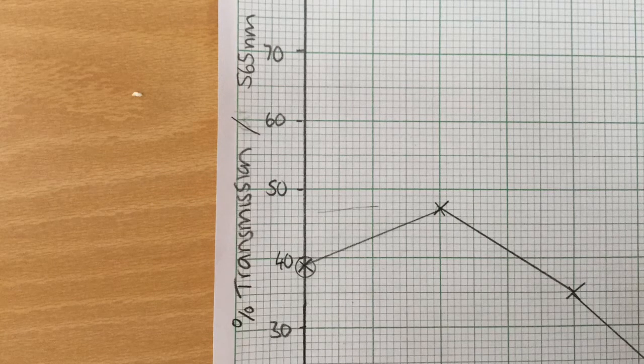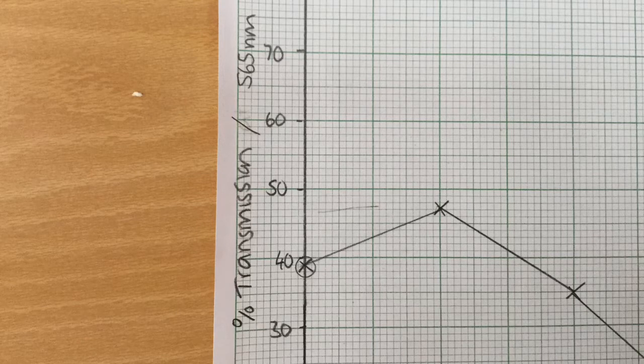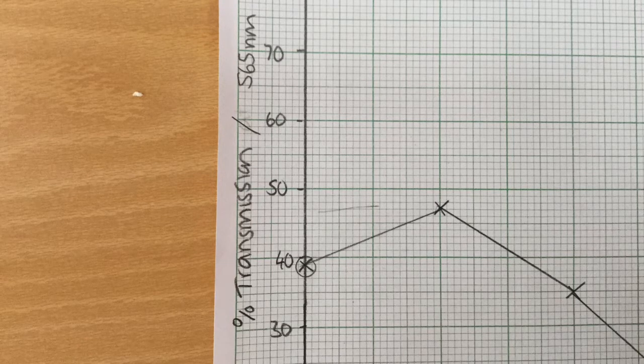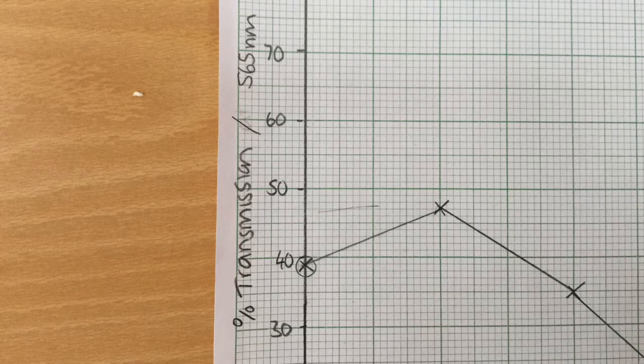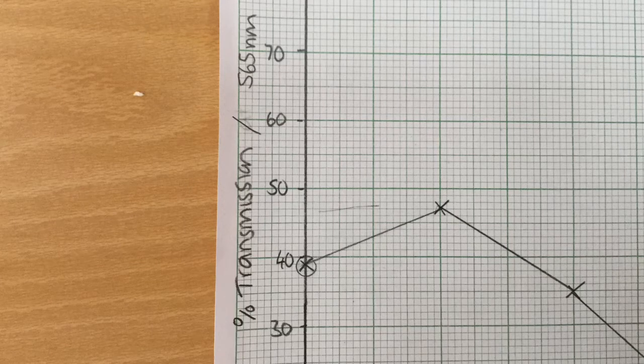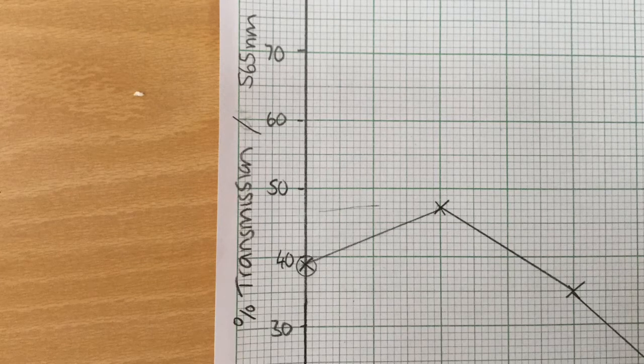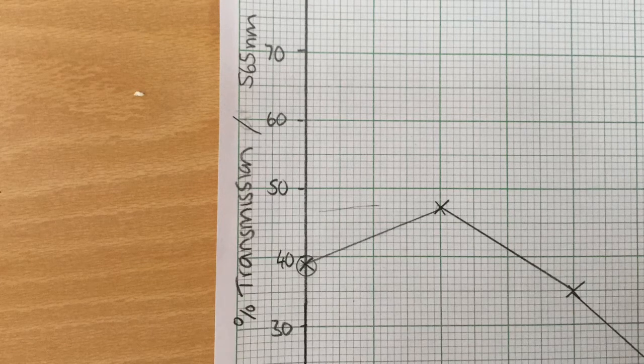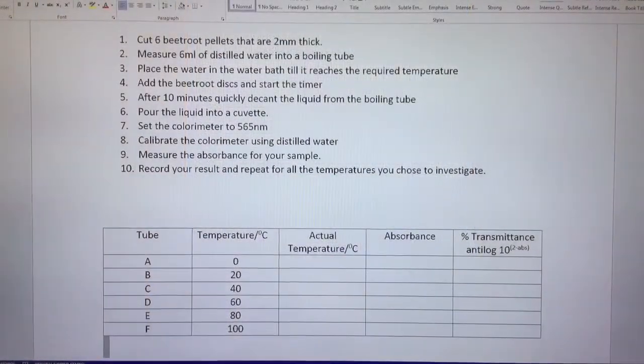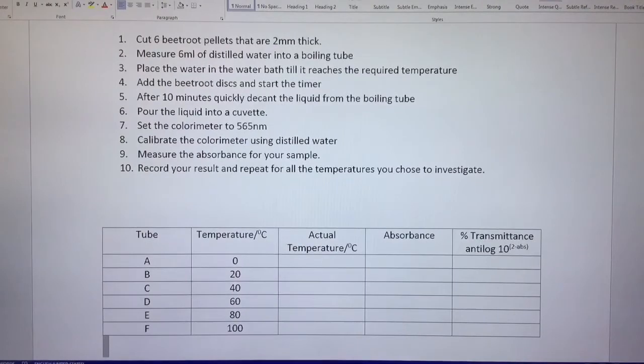In the worksheet that you used, I've included a column there for actual temperature because, of course, while a water bath may be set at 40 degrees or 60 degrees, the actual temperature of the water in there without the lid on may differ. And in terms of producing our curve to get the best possible curve, we want to make sure that we plot the points that we actually have.